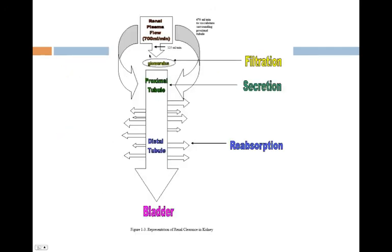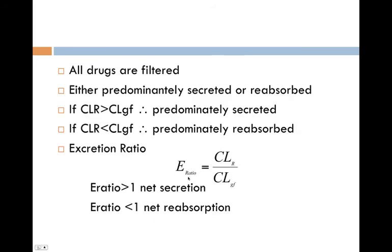If our renal clearance is greater than that of our filtration clearance, so let's go back again here. So if our renal clearance, so the amount going out here, is greater than what was filtered here, what's happening? Drug must be added to the nephron. So that's going to be secretion. So secretion will be the greater magnitude there.